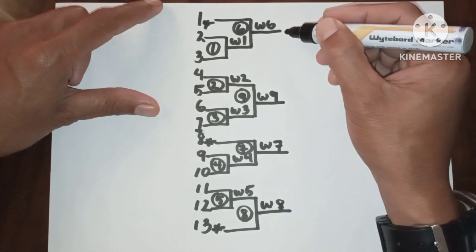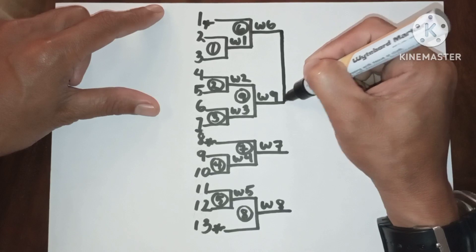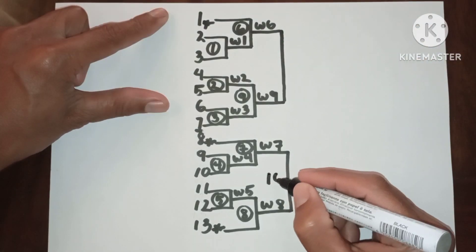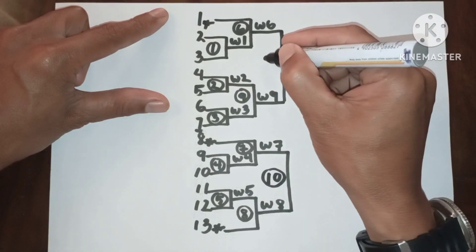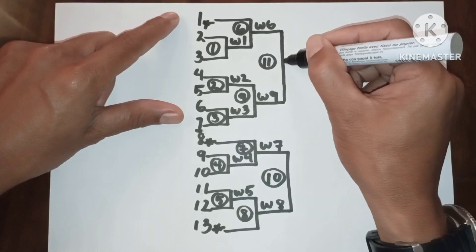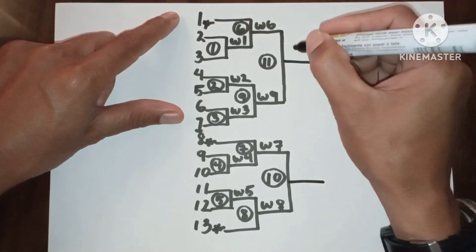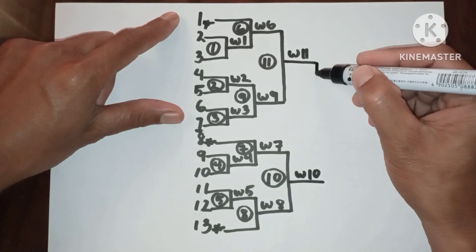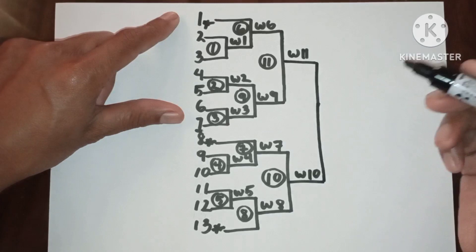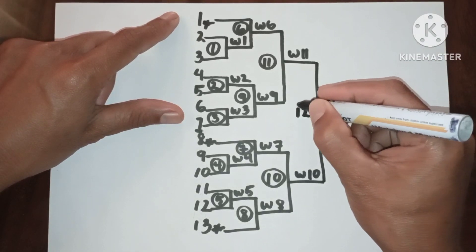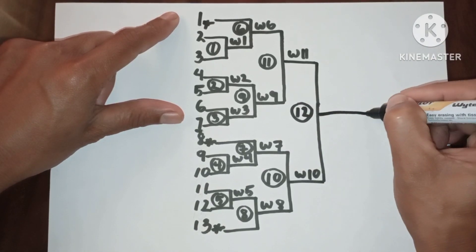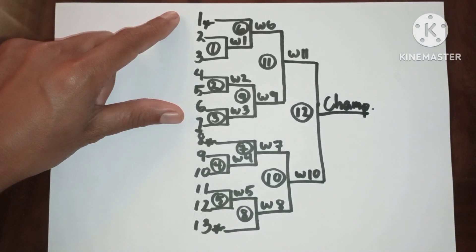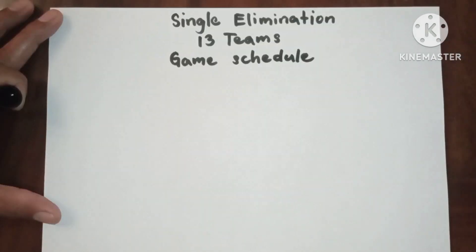Now let us have the vertical lines for Round 3. Game 10, Game 11. Let us have the results: Winner 11 from Game 11, Winner 10 from Game 10. Now the final round — Game 12 — and the Champion. Let us proceed to the game schedule since we have 12 games.